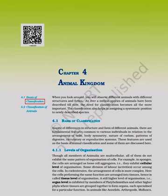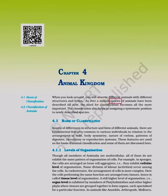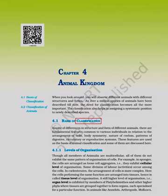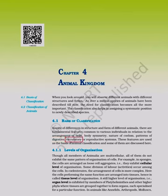Biology Chapter 4: Animal Kingdom. When you look around, you will observe different animals with different structures and forms. As over a million species of animals have been described till now, the need for classification becomes all the more important. Classification also helps in assigning a systematic position to newly described species. Section 4.1 covers the basis of classification.